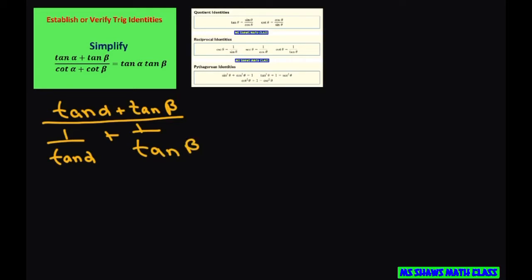The next step is to get the common denominator for this part. So we still have tan alpha plus tan beta. Now your common denominator is going to be tan alpha times tan beta because they're different.